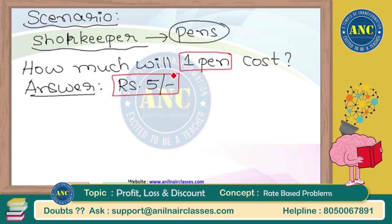I told you that one pen will cost 5 rupees. The meaning of that statement is: one pen costs 5 rupees does not necessarily mean you are only paying 5 rupees at the end of the transaction. It can be any number of pens you are purchasing and any total amount you are paying, depending on the number of pens. That is the simple statement you need to remember.